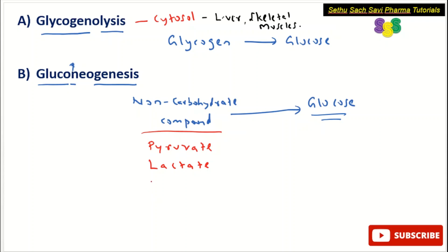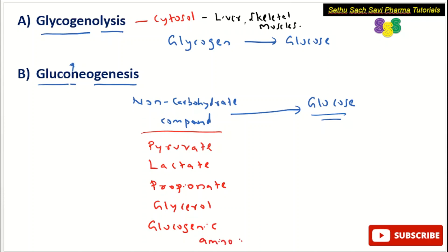Another non-carbohydrate compound is propionate, which can also be converted to glucose. Another is glycerol, which can also be converted to glucose. Another non-carbohydrate compound from which glucose is synthesized is amino acids, especially glucogenic amino acids. So pyruvate, lactate, propionate, glycerol, and glucogenic amino acids are all non-carbohydrate compounds, and the process of converting them to glucose is called gluconeogenesis.